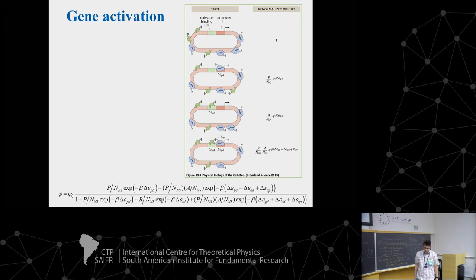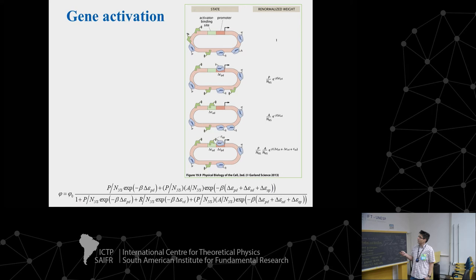When only the activator is bound without RNA polymerase, the statistical weight is A·exp(−β·ΔεAD), where A is activator concentration and ΔεAD is the activator-DNA interaction energy. In the most complex case — both activator and RNA polymerase bound — we have a product of their concentrations times a Boltzmann factor containing all three interaction energies: RNA polymerase with DNA, activator with DNA, and the protein-protein interaction energy between activator and RNA polymerase.